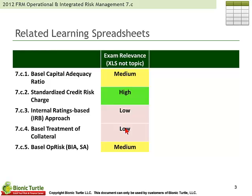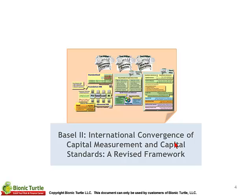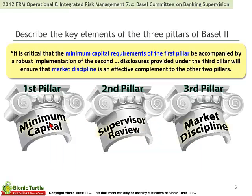Then we've got treatment of collateral, also low, because the testability will be low. And then the two basic approaches to operational risk — medium testability — because we have seen those tested before. And so we start with the Basel II framework, where the basic idea, still really unchanged, is three pillars. The first pillar is the minimum capital requirements. When people refer to Basel in technical discussion, most of the time they're implicitly referring to the first pillar, because these are the rules that determine the regulatory capital.